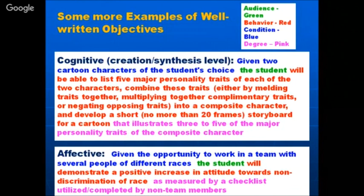For the affective domain example: 'Given the opportunity to work in a team with several people of different races [condition], the student [audience] will demonstrate a positive increase in attitude towards non-discrimination of race [behavior], as measured by a checklist completed by a non-team member [degree].' A person outside the team prepares a checklist to assess whether the student is displaying non-discriminatory attitudes toward different races.